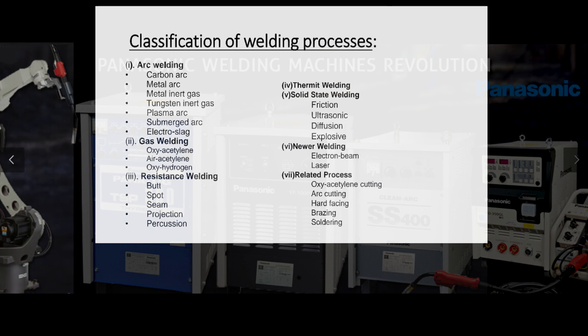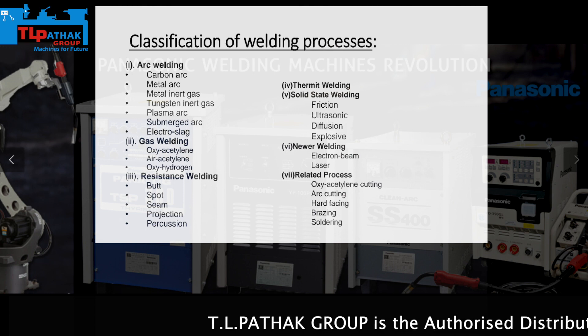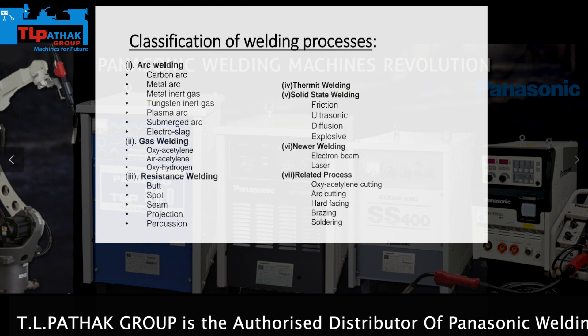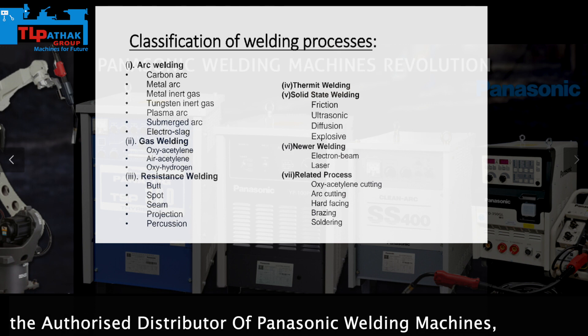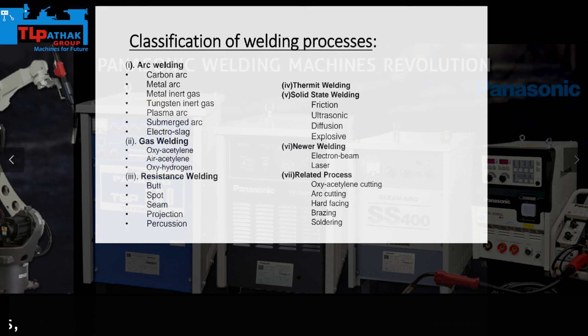Then there is electroslag welding. Then gas welding, including oxy-acetylene welding — you can see this in roadside welding, for example if a stand or car part broke. Then resistance welding, which includes butt welding, seam welding, spot welding — like spot welding used on almirahs — and projection welding and percussion welding. Then there is thermite welding.